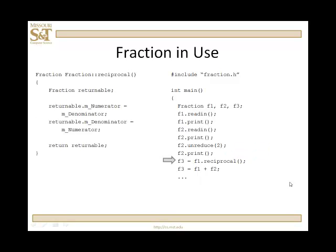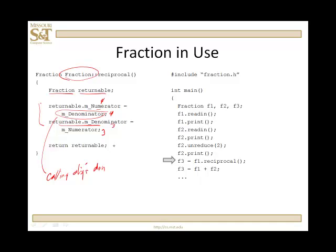F3 is going to be assigned F1 calling its reciprocal. Remember, the reciprocal function returns a fraction. When control passes to this member function, we create a temporary fraction called returnable. We assign to its numerator the denominator of the calling object — F1's denominator was 4, numerator was 3 — so the numerator of returnable is 4 and the denominator is 3. I can directly access these because I'm in a member function. I return returnable, which is four thirds, and that gets assigned to F3. If F3 then calls print, it outputs four thirds.